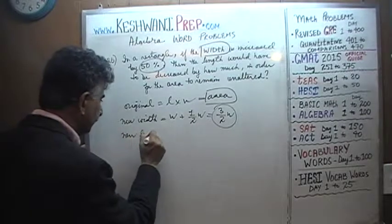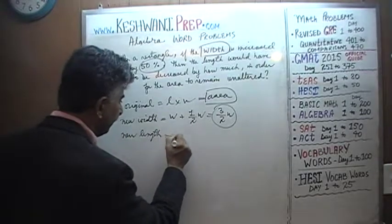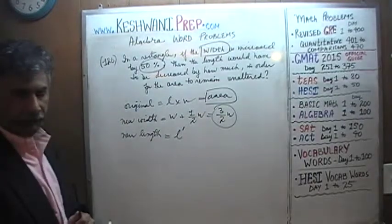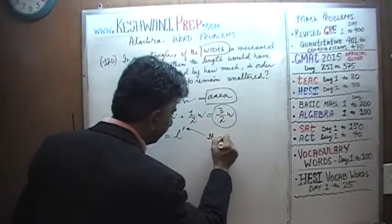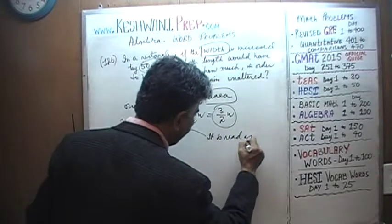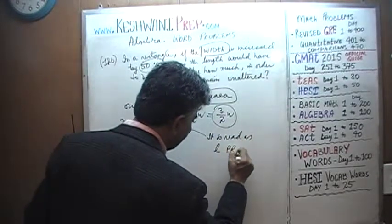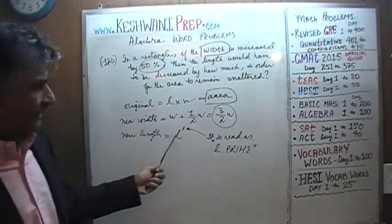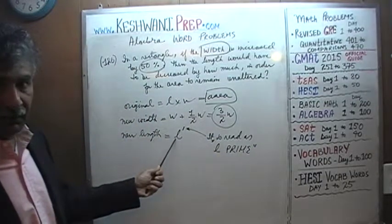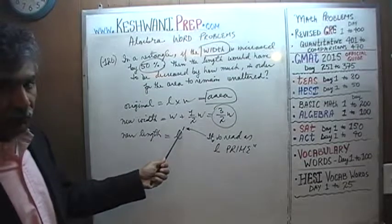Let's let the new length be L prime. This symbol that you see here is read as L prime. Which simply means that we are using the same letter, but it's not the same value, it's a new value, L prime.